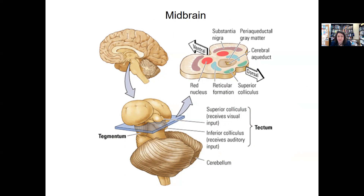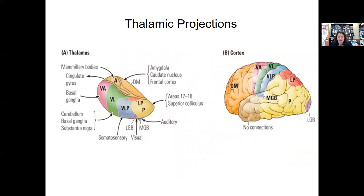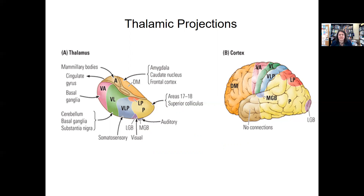Then you have the diencephalon, which includes the hypothalamus and the thalamus — we have a diagram specifically of the thalamus here. The hypothalamus interacts with the pituitary gland and participates in nearly all aspects of motivated behavior: eating, sexual behavior, sleeping, temperature regulation, emotional behavior, movement, and endocrine function. The thalamus relays sensory information to appropriate areas of the brain, relays information between cortical areas, and relays information between the forebrain and the brain stem — making it really important for connections throughout the brain.